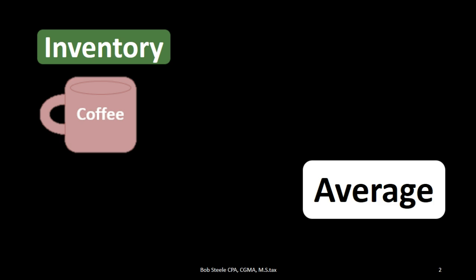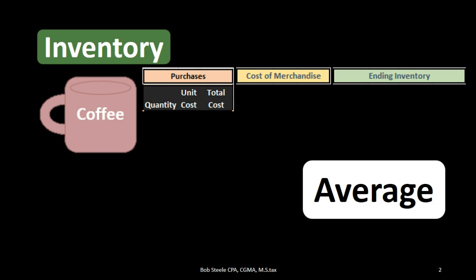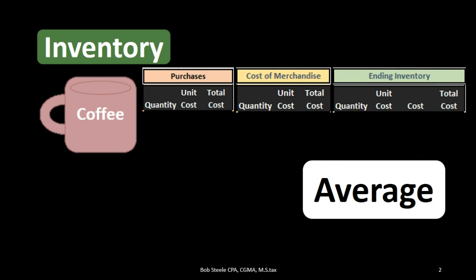We will be using the same worksheet. I highly recommend working a worksheet such as this when doing any cost flow assumption for inventory, which will include a purchases section, a cost of merchandise section, and an ending inventory section. In each piece we can calculate the unit cost times the quantity to give the total cost, which can answer the most questions asked for this topic.